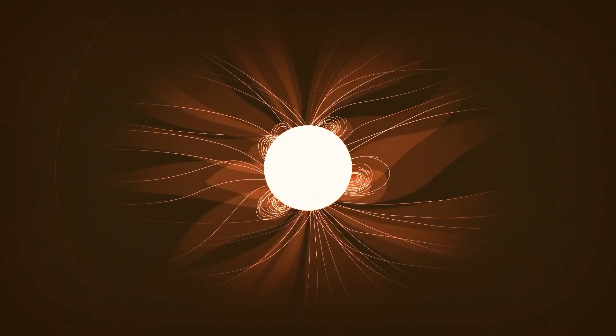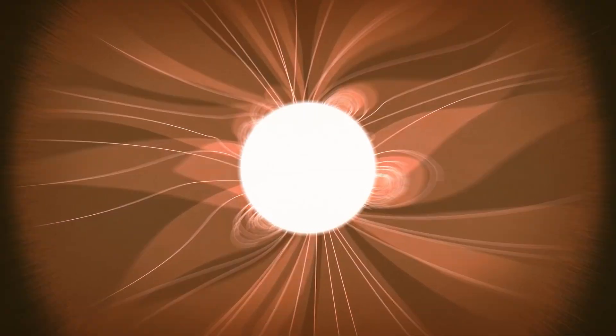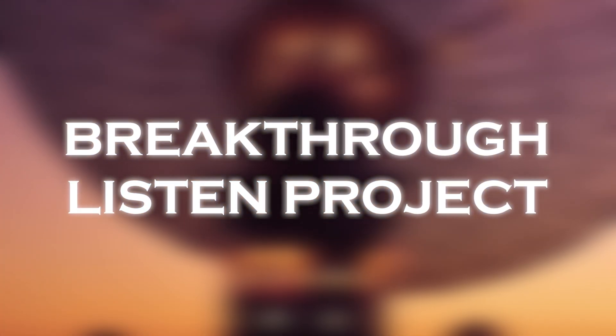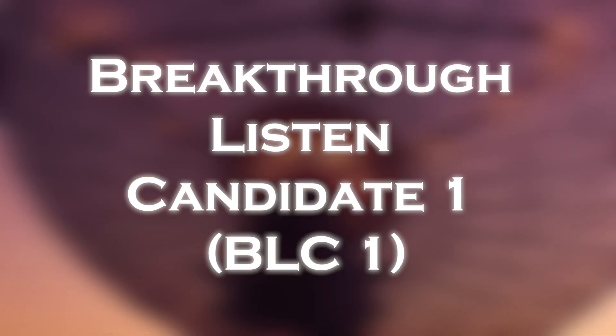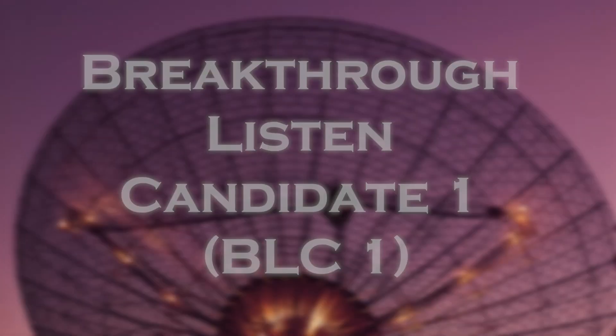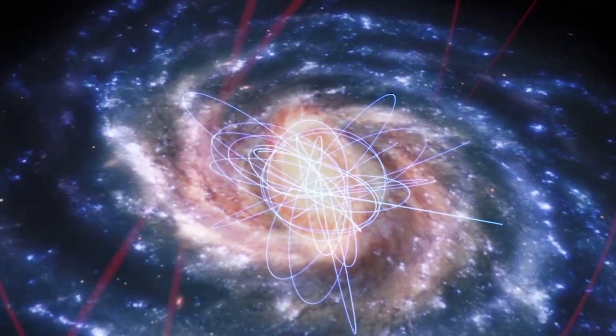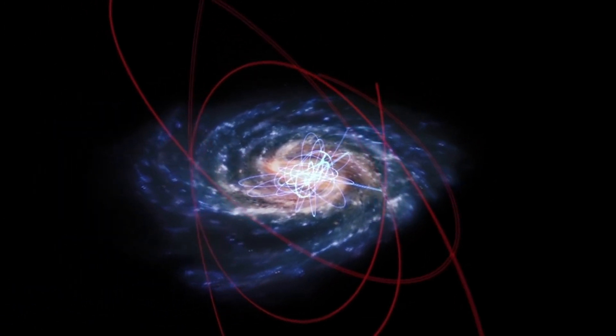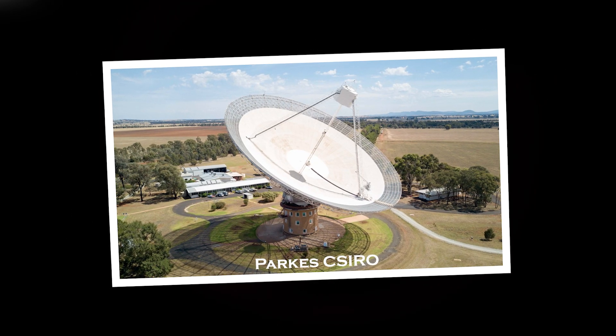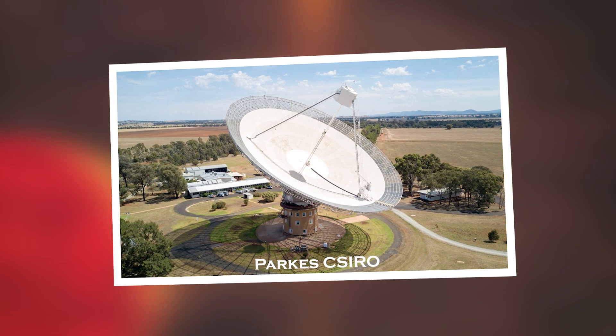But where did the signal between these two stars come from? The groundbreaking Breakthrough Listen project, dedicated to searching for extraterrestrial communication in the universe, has named this signal Breakthrough Listen Candidate 1, BLC-1. The project, which has approximately $100 million in funding, has used thousands of hours of observation with state-of-the-art telescopes around the world. The signal was detected by the Parkes radio telescope in New South Wales, Australia.